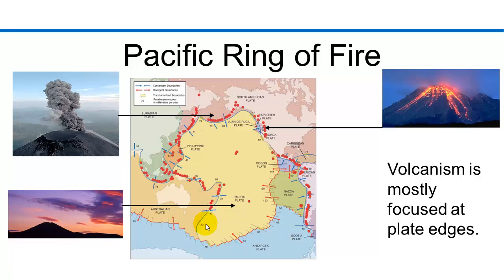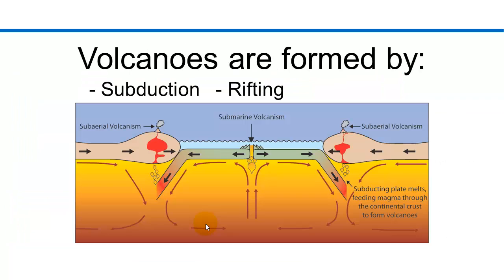But why are volcanoes located at the edges of the plate boundaries? Well, because that's where the action is – subducting, rifting, all kinds of tension is built up at our plate boundaries.